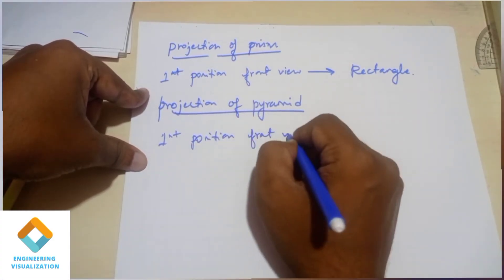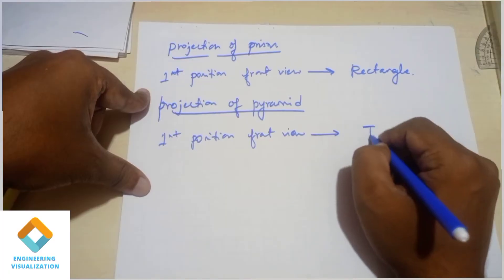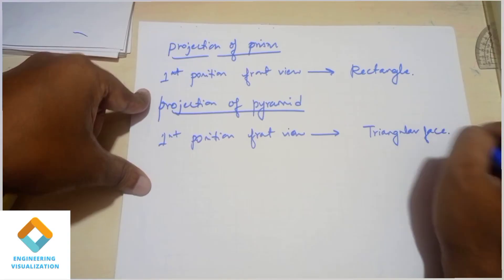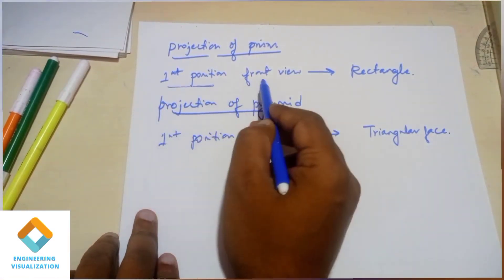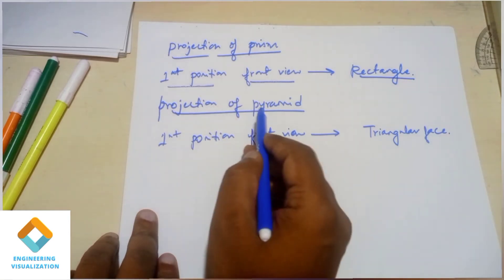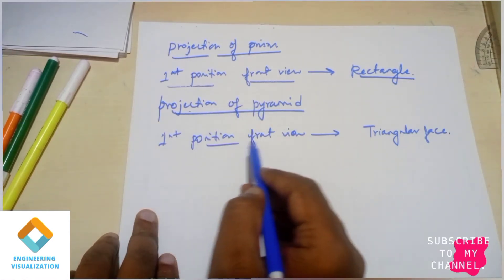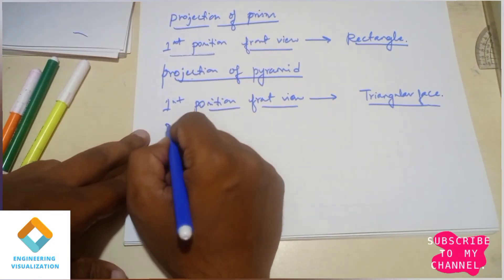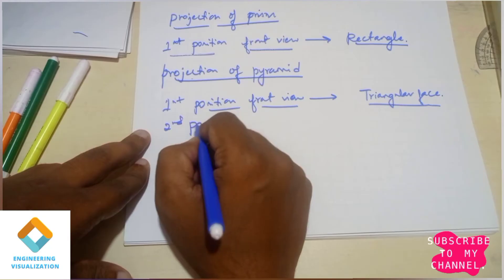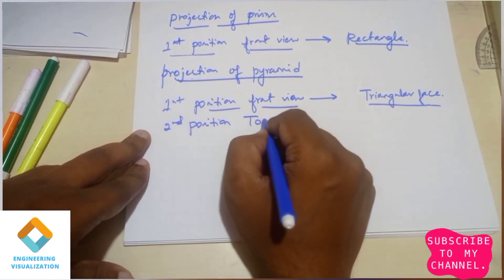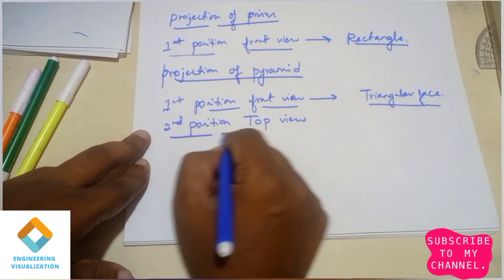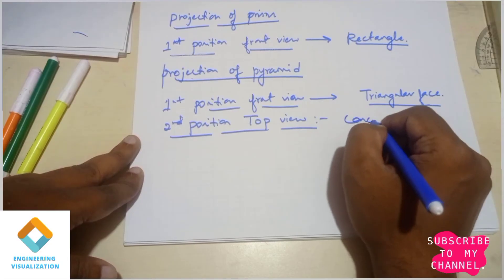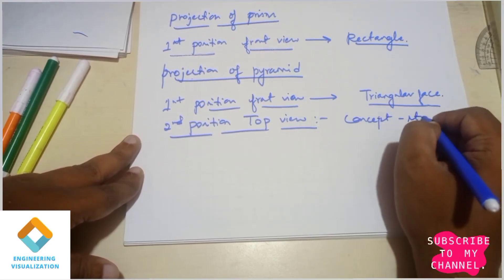First position projection of prism — first position is front view. First position is triangular; this is a gap. Many prism problems are triangles. First position is front view. Second position is top view — so there are 3 steps. The steps involve the top view, clean and complete.